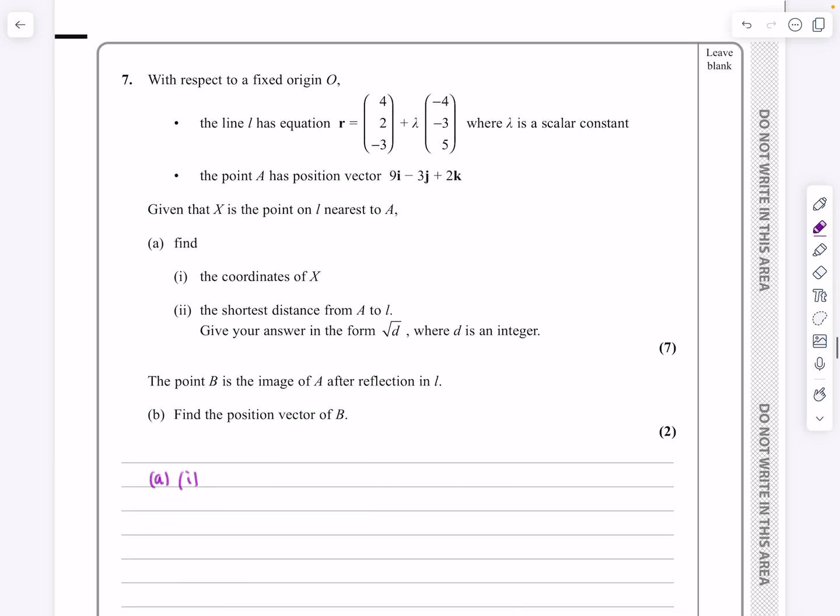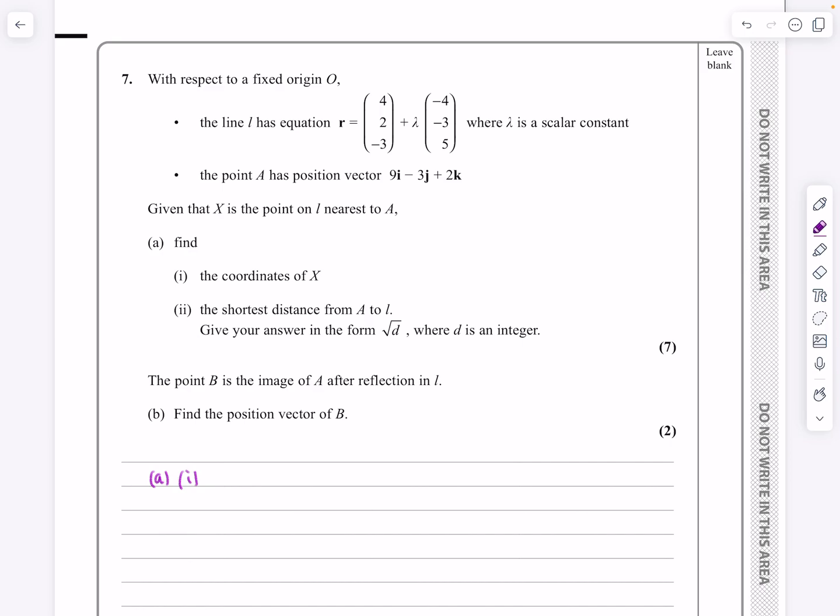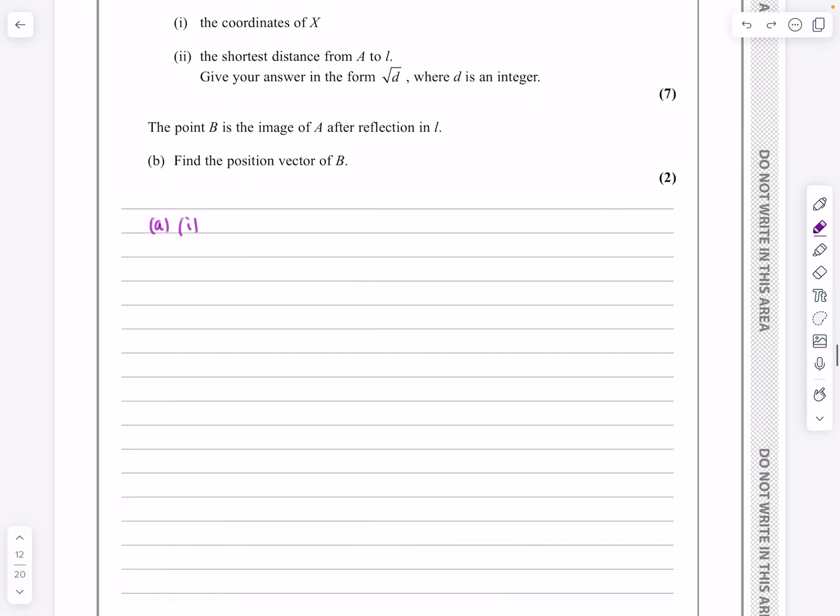What I would always do is read it out and then try and draw some quick sketch. It's going to make a real big difference to the final solution. So it says we've got the equation 4, 2, minus 3, plus lambda, minus 4, minus 3, 5. So I know that would be a point on the line, and I know this is the direction of the line. And then we've also got some point A, which they've just given me the position vector, so I know the coordinates of that point. It says given that X is the point on L nearest to A, can I then do some things? Can I find the coordinates of X? Can I find the shortest distance? Yeah, definitely. I need to draw out a diagram here.